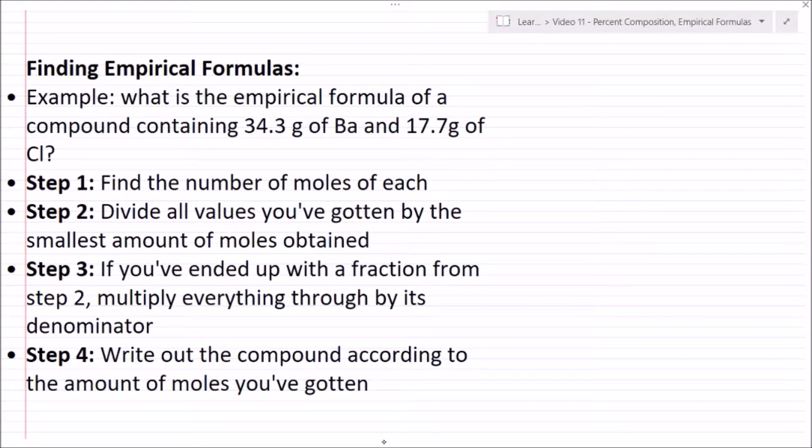Here we're going to first want to determine the number of moles of each element. So number of moles of barium - I'm just going to take my grams divided by my molar mass. The molar mass of barium is 137.327, and this is going to come out to 0.250 moles of Ba. For chlorine, I have 17.7 divided by 35.45, the molar mass of chlorine, and this is going to get me 0.500 moles of chlorine.